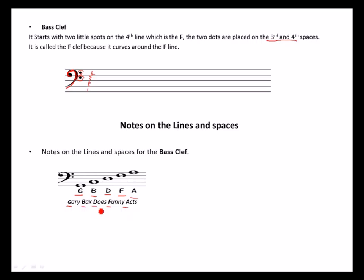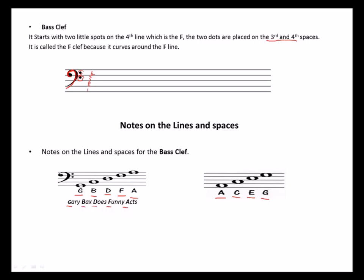The spaces of the bass clef are: A on the first space, C on the second space, E on the third space, and G on the fourth space. We use the phrase 'All Cows Eat Grass' — A for All, C for Cows, E for Eat, G for Grass.